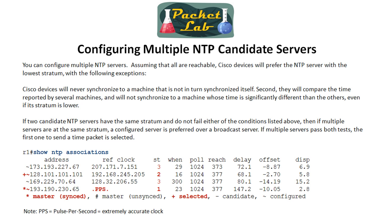You're going to want more than one NTP source in case one goes down. Once synchronized, NTP maintains accuracy pretty well — if you lose connectivity to an NTP server, it won't suddenly think it's 1993. It'll continue with the system clock time but won't receive updates, so over an extended period there's the possibility of clock drift. For a short outage it's not a big deal, but having multiple servers means if one goes down, it'll start getting time from the secondary.